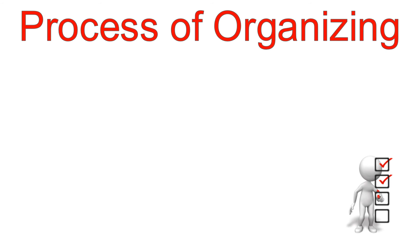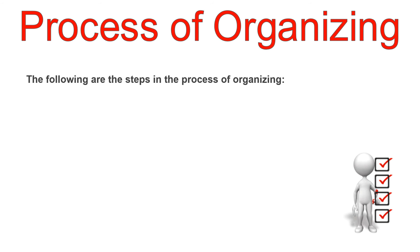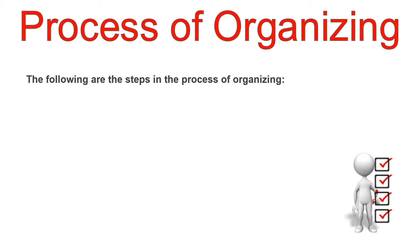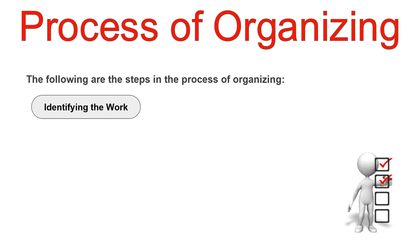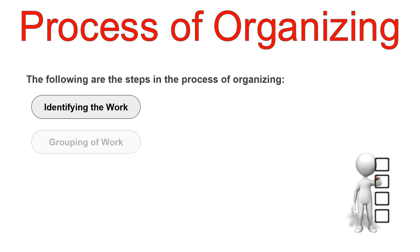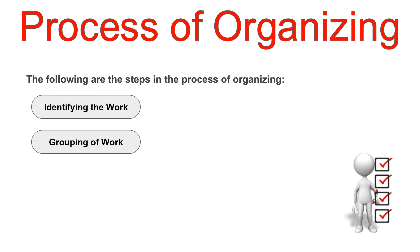Now we will talk about the process of organizing. As one of the most important functions of management, organizing follows a meticulous process. The following are the steps of the process of organizing. The first step is identifying the work. The first step is to identify the work that has to be done by the organization — this is the ground level from which we begin. The manager needs to identify the work and tasks to be done to achieve the goals of the organization. The second step is grouping of work. For the sake of smooth flow and functioning of the organization, similar tasks and activities are grouped together.